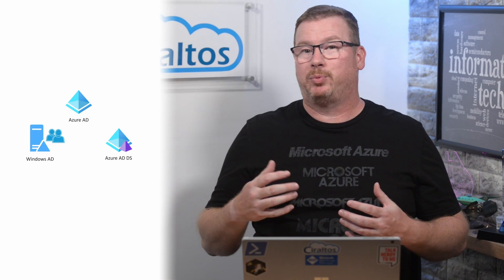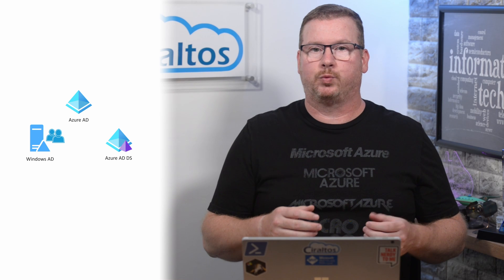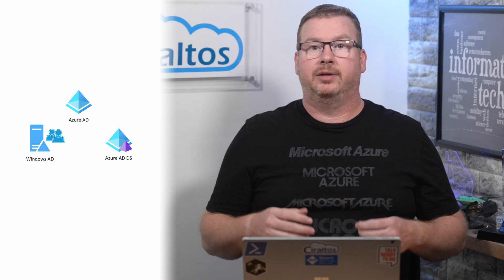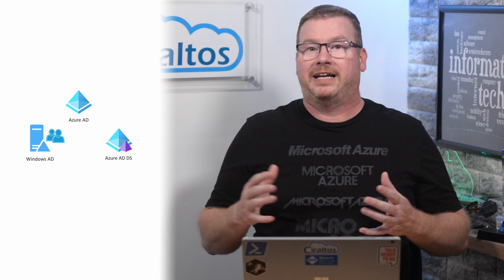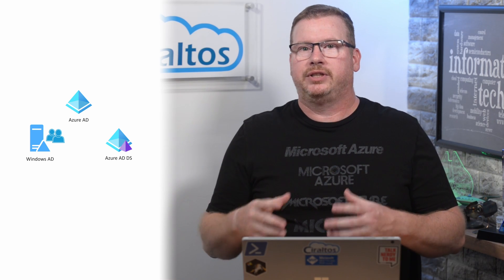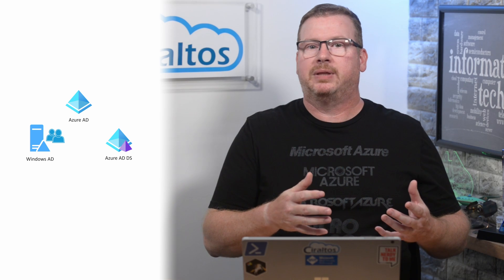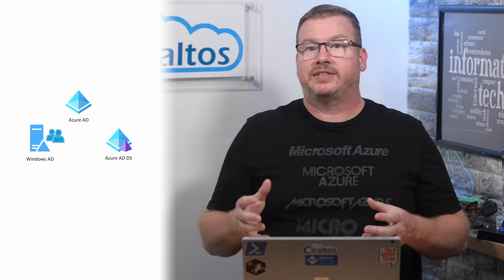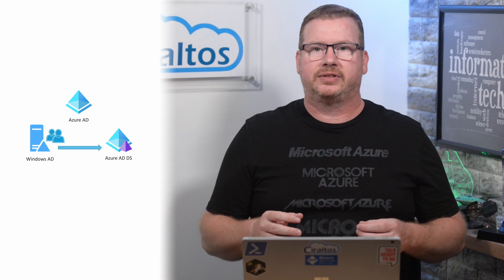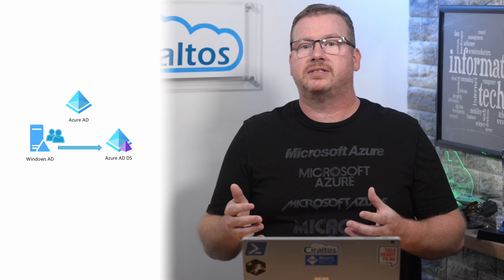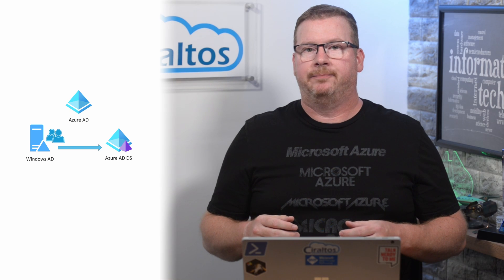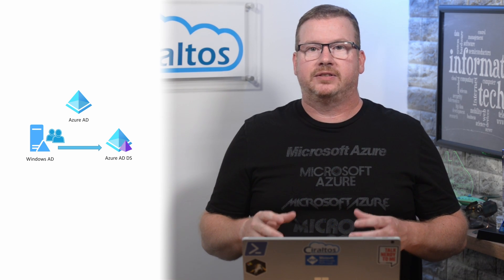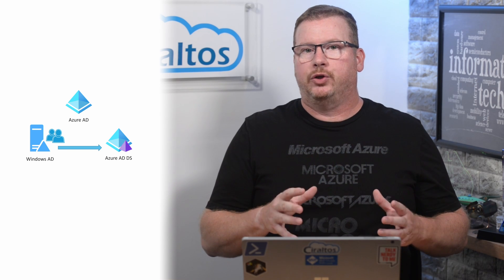To get started, let's say we have a pretty simple setup: an on-premises Windows AD domain, an Azure AD domain, and an Azure AD Domain Services domain. Check out my video linked below for an overview of each. We want to allow users in the Windows AD domain to log into resources in the Azure AD Domain Services domain with the same identity. Let's review how Azure AD and Azure AD Domain Services manage identities with the user forest type.